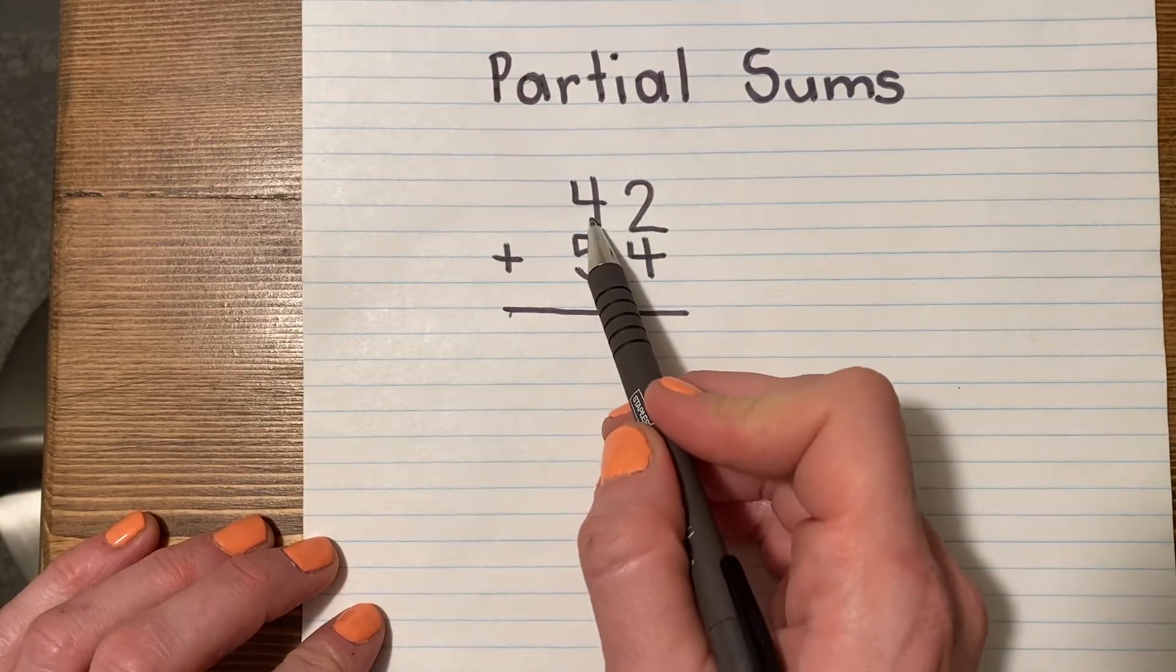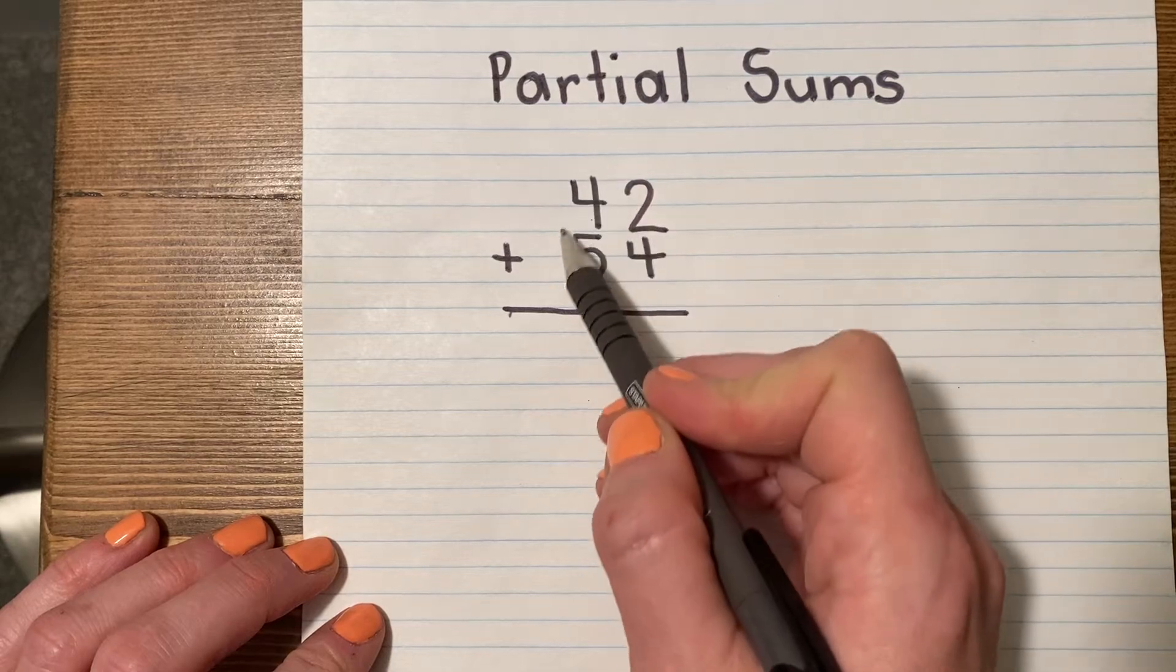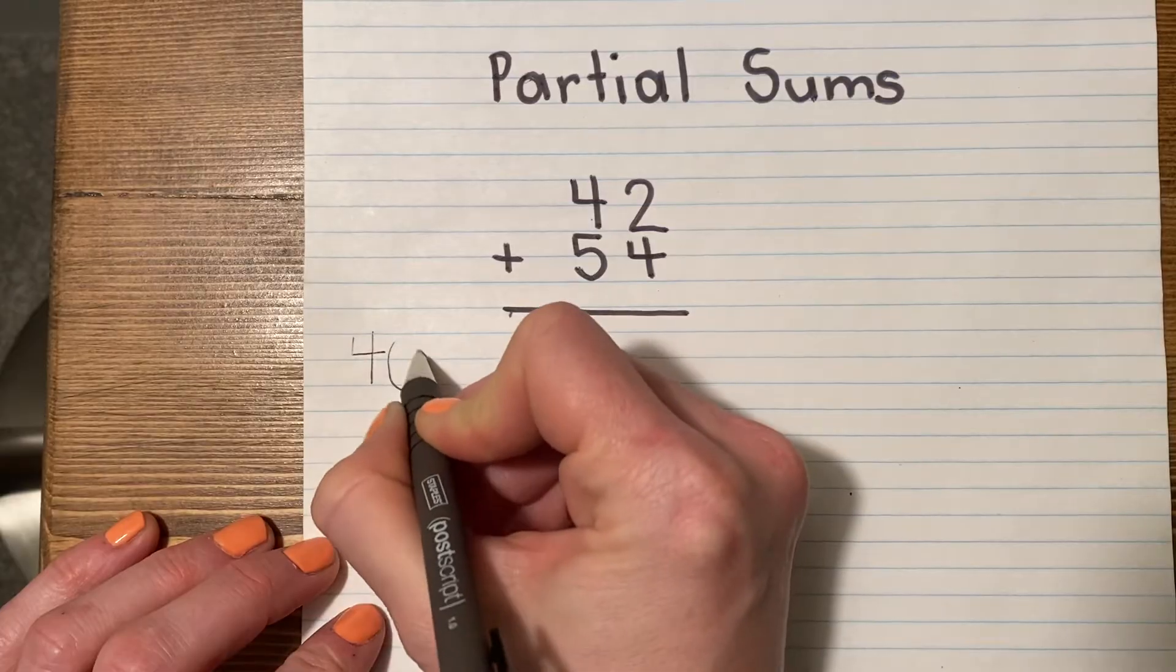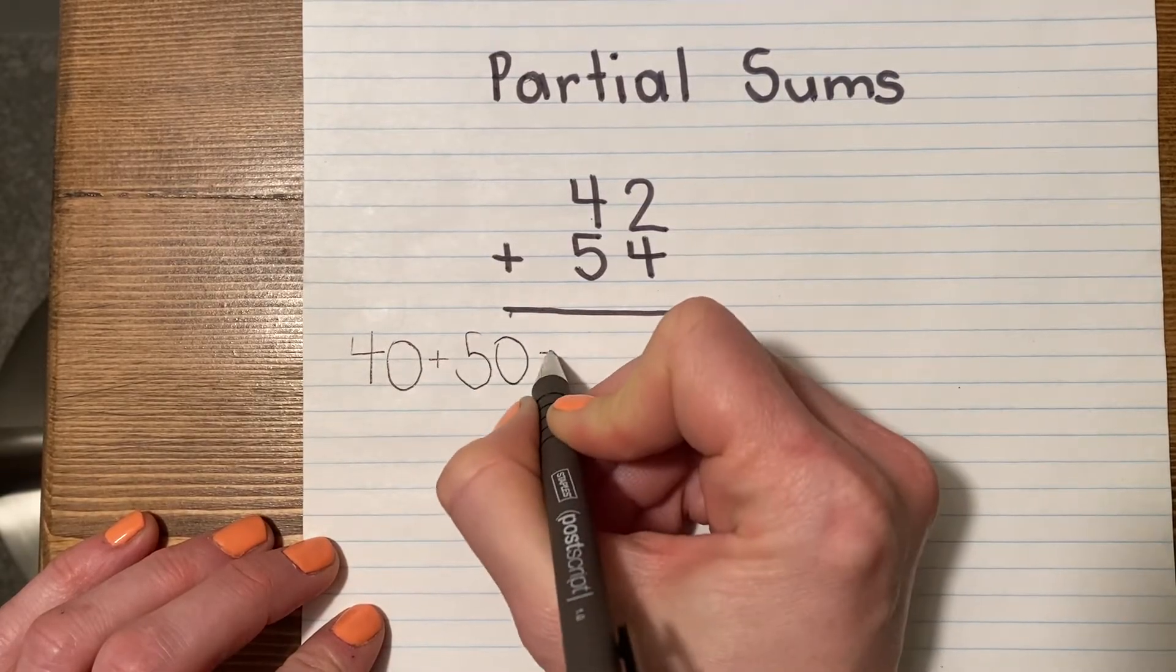So what you're going to start with is adding your tens. So 40 plus 50, just like this. 40 plus 50 equals.